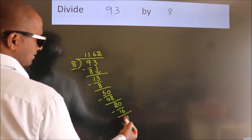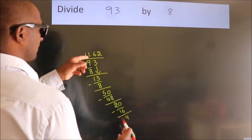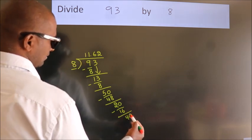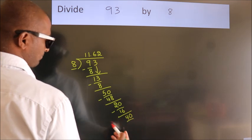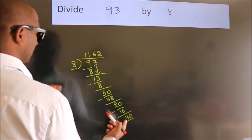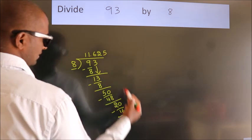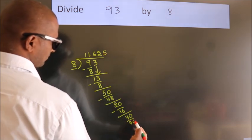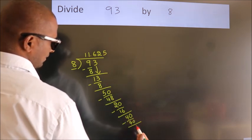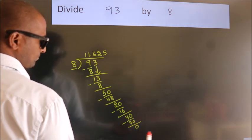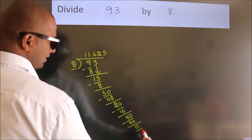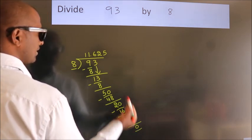After this, we already have the decimal. So, directly take 0. So, 40. When do we get 40? In 8 table. 8 times 5, 40. Now, we subtract. We get 0. Here, we got remainder 0. So, this is our quotient.